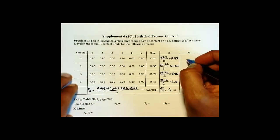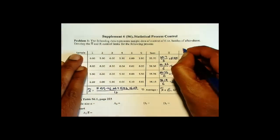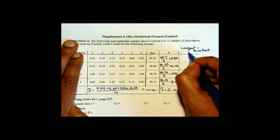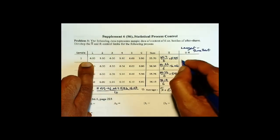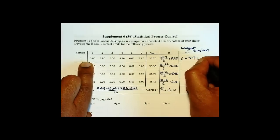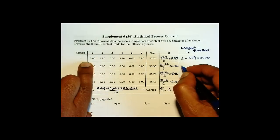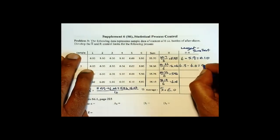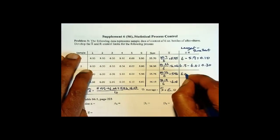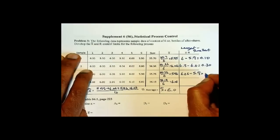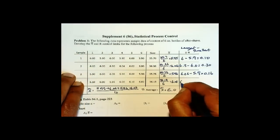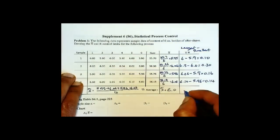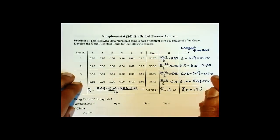Now range, so you look at the largest value minus smallest. The largest value here is 6, smallest value is 5.9, so 0.1. Next one, 6.3 minus 6 is 0.3. Then 6.06 minus 5.9 is 0.16. And 6.1 minus 5.96 is 0.14. You average these and you get 0.175.